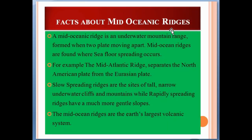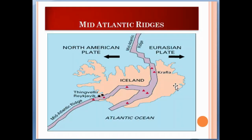Facts about mid-oceanic ridges: Mid-oceanic ridges are an underwater mountain range formed where two plates move apart. They are found where seafloor spreading occurs. Mid-oceanic ridges are the sites of tall, narrow underwater cliffs and mountains, while rapidly spreading ridges have much more gentle slopes. Mid-oceanic ridges are the Earth's largest volcanic systems, formed when two plates move apart and seafloor spreading takes place.